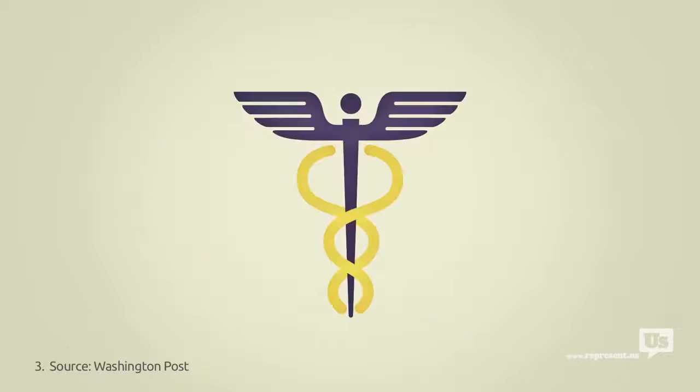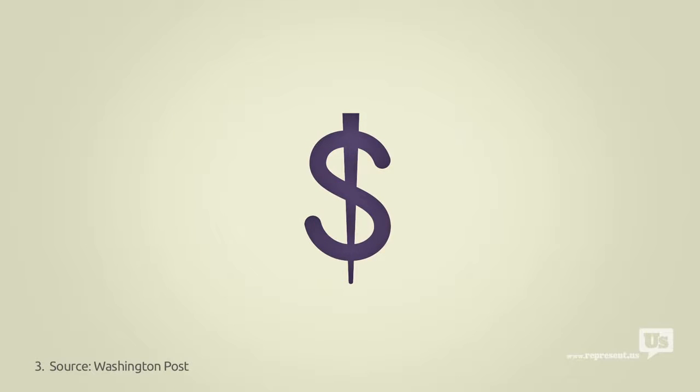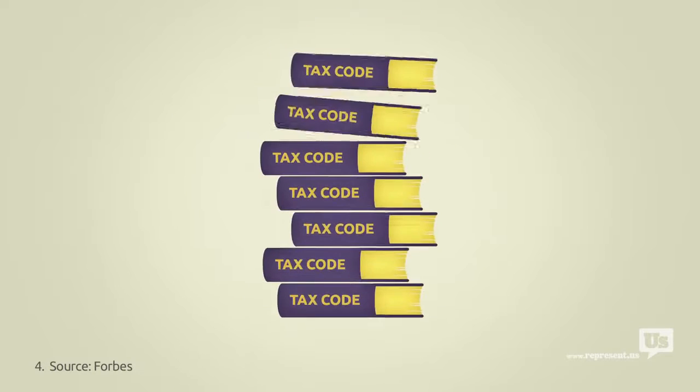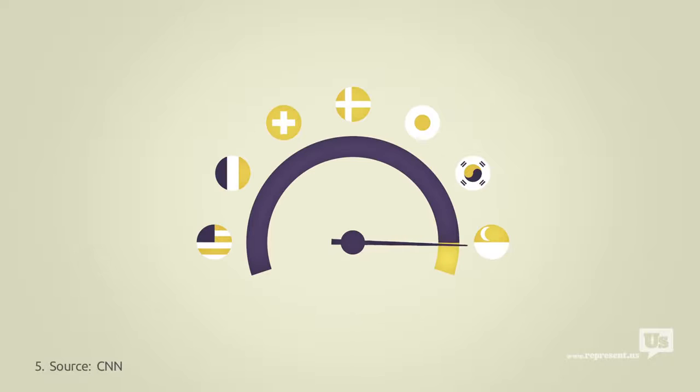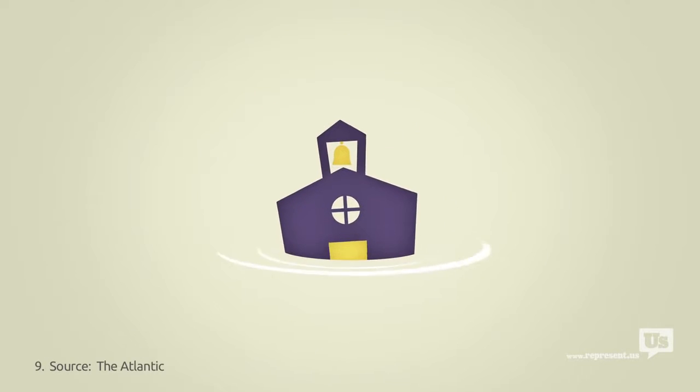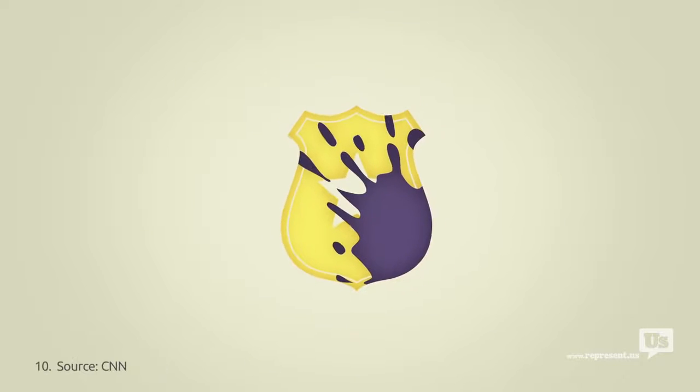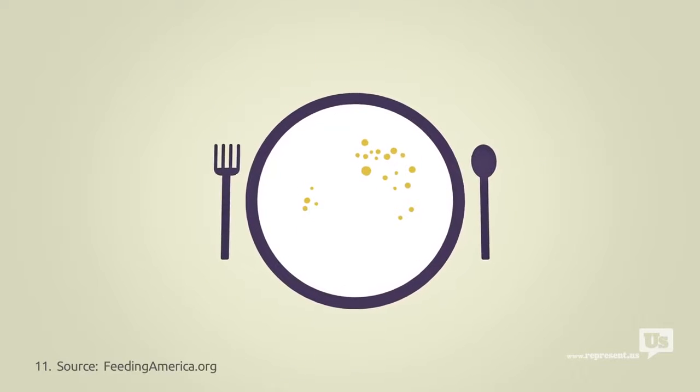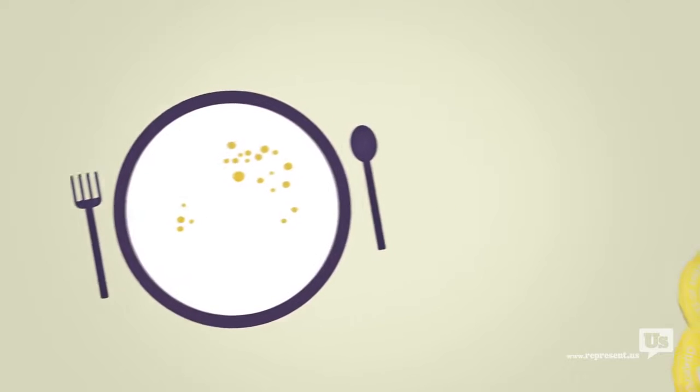We pay for it with the most expensive healthcare in the world. We pay for it with a tax code that's a complete mess. We pay for it with internet that's slower and more expensive, with wasteful spending, a floundering education system, a catastrophic drug war, and one in five American children born into poverty. Almost every major issue we face as a nation can be traced back to this graph.